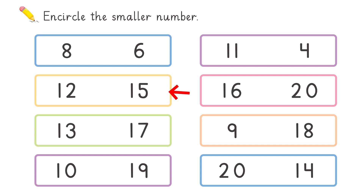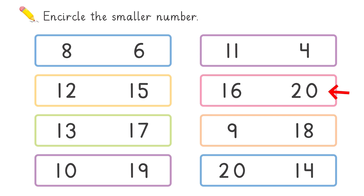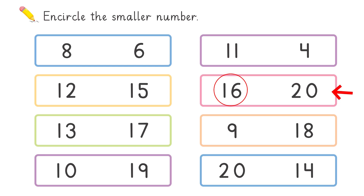Then twelve and fifteen — which one is smaller? Twelve is smaller. And for sixteen and twenty, which one is smaller? Sixteen is smaller. Again, I have discussed the first four parts and the next four parts are done in the same way.